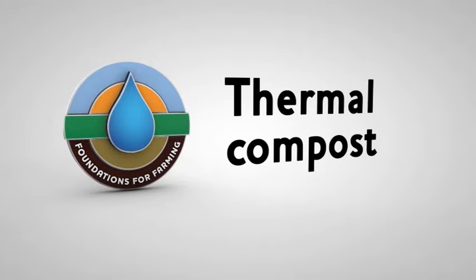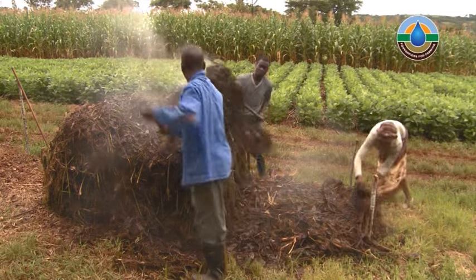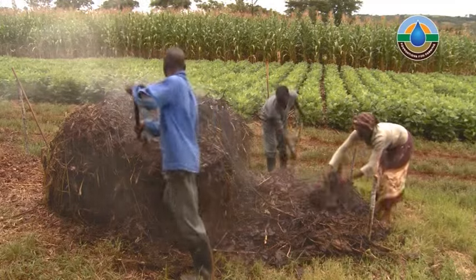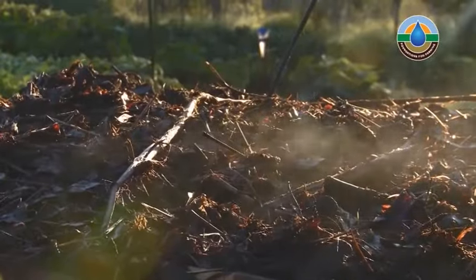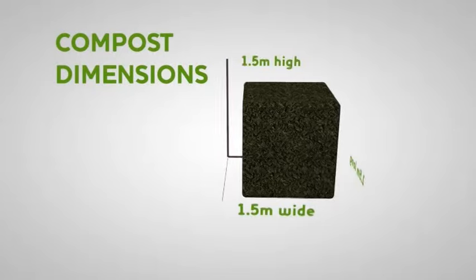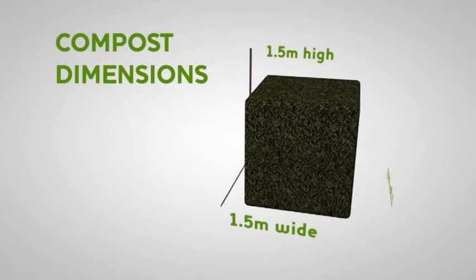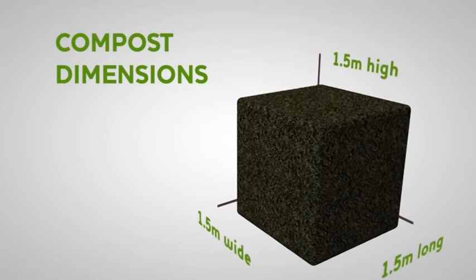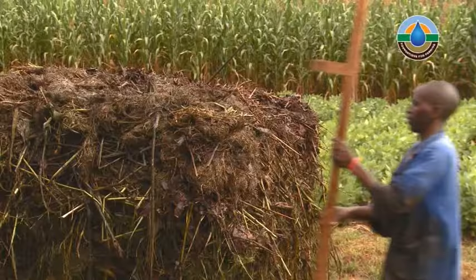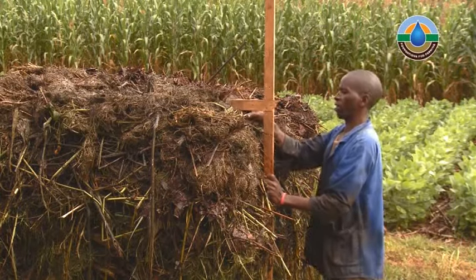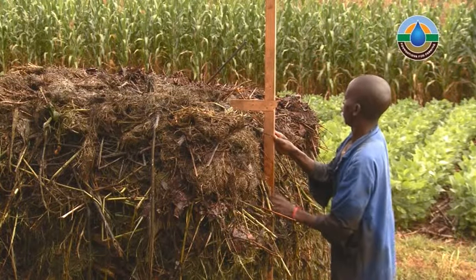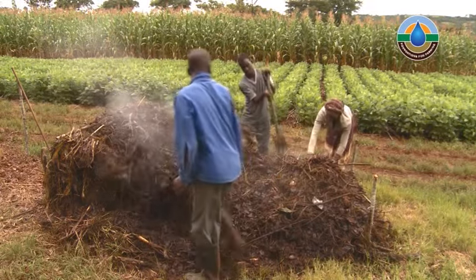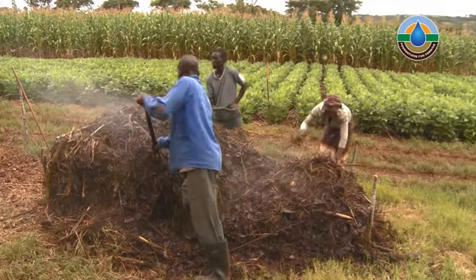Thermal compost. The compost that we will be making is thermal compost and will get very hot. This heat is important as it will kill all weed seeds and pathogens. The smallest thermal compost heap should be about a 1.5x1.5x1.5 metre pile, which will ensure the compost gets hot in the centre. It is also small enough for a few people to work in a few hours, and it will be enough to sustain a quarter hectare of maize.